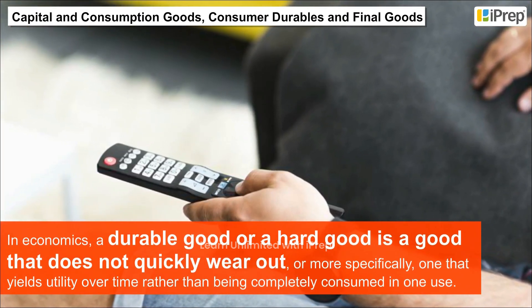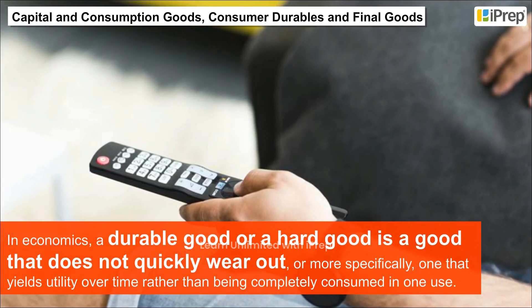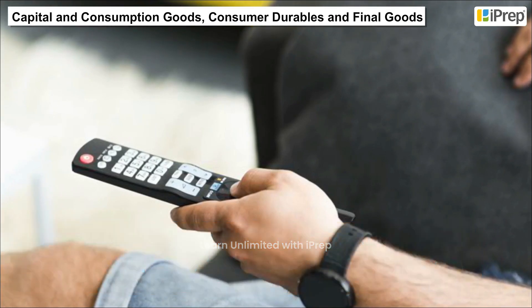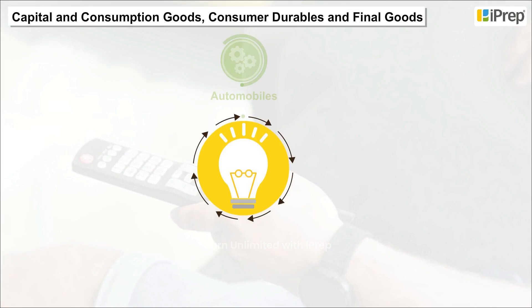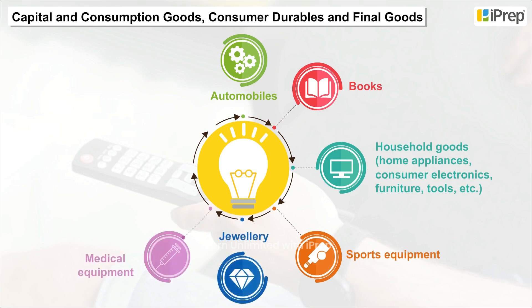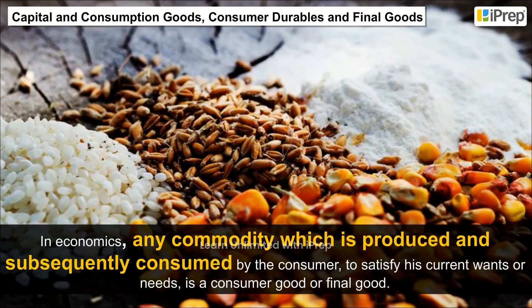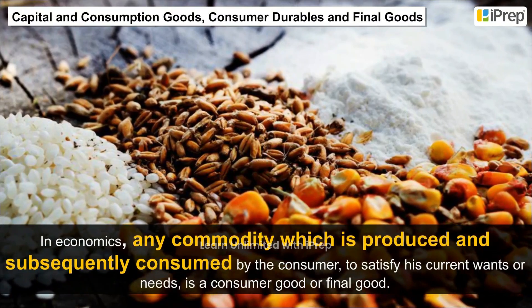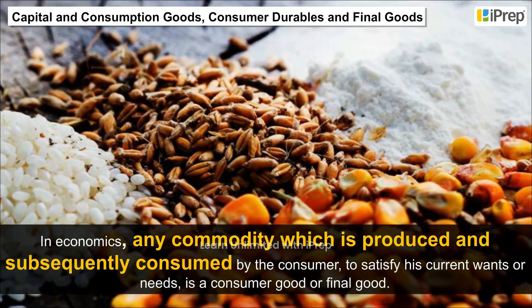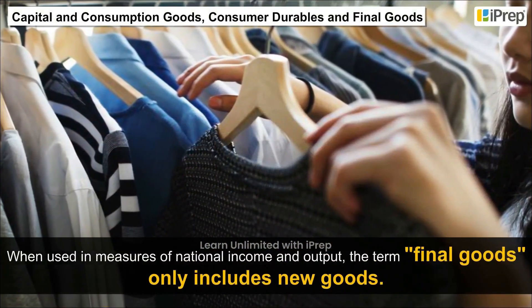A durable good, or hard good, is a good that does not quickly wear out, or more specifically, one that yields utility over time rather than being completely consumed in one use. Examples of consumer durable goods include automobiles, books, household goods, home appliances, consumer electronics, furniture, tools, sports equipment, jewelry, medical equipment, firearms, and toys. Any commodity produced and subsequently consumed by the consumer to satisfy current wants or needs is a consumer good or final good.